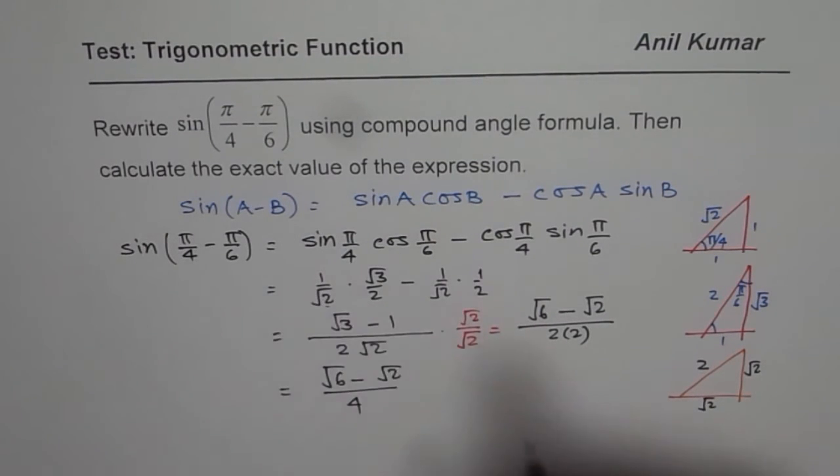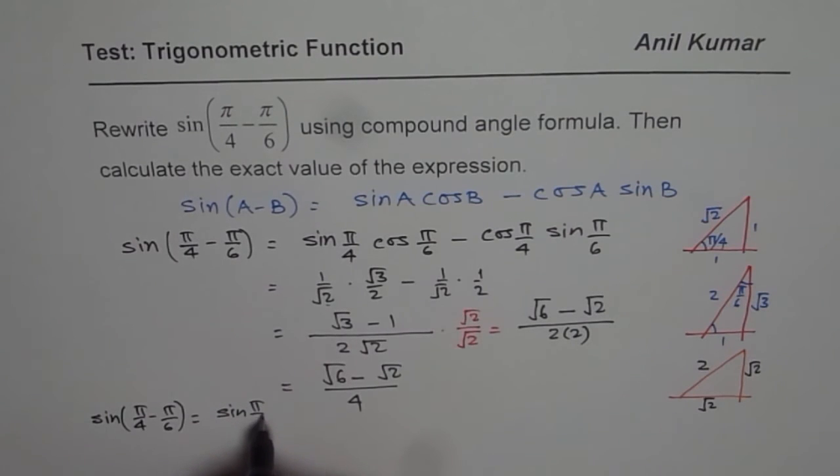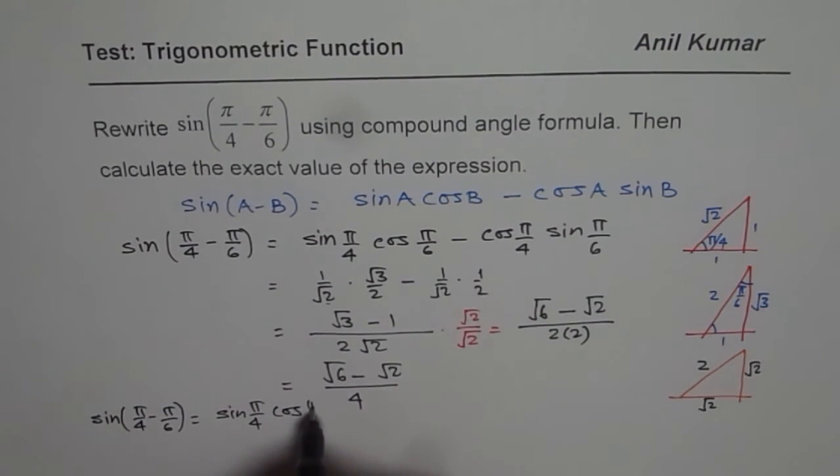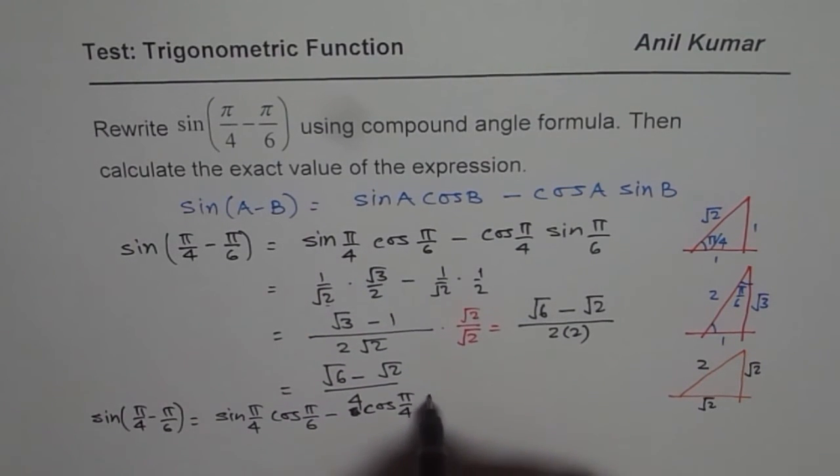So I will again start with the same question. Let me rewrite this. So we have sin(π/4 - π/6) equals sin(π/4) cos(π/6) minus cos(π/4) sin(π/6).